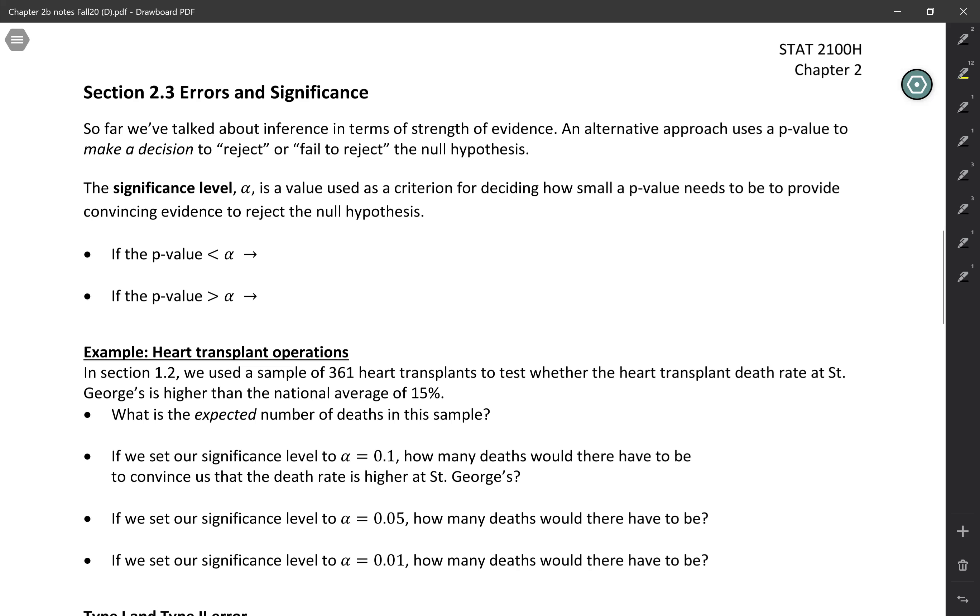Now there's problems with that, with turning this into a dichotomous kind of thing, but we'll talk about that later. So to make a decision like this, you basically have to set a cutoff. How small does your p-value need to be before you are going to consider the evidence strong enough to reject the null?